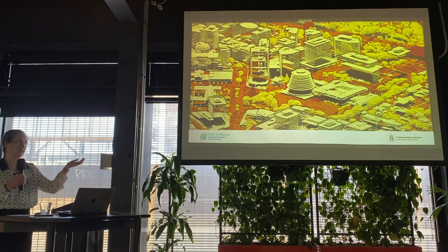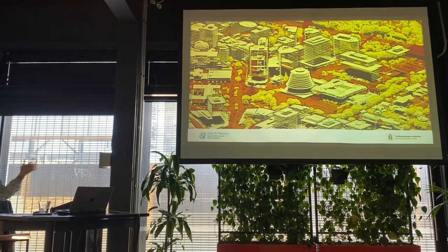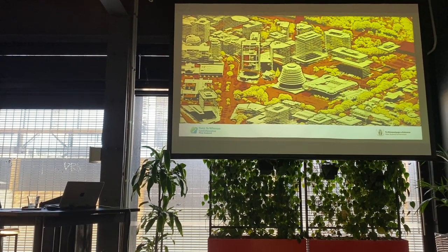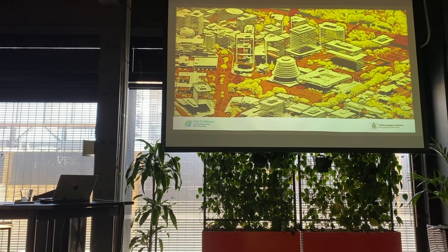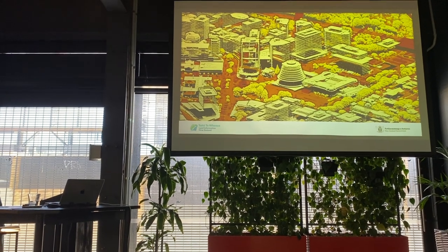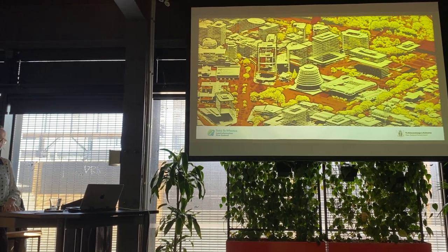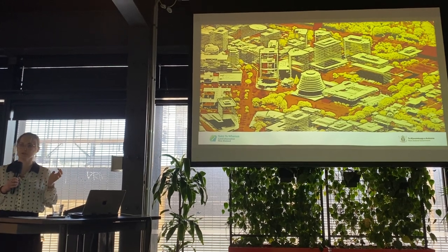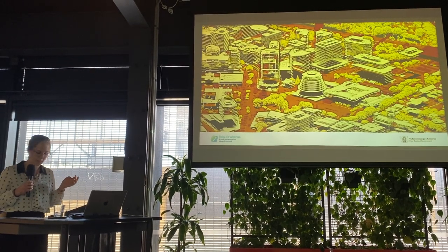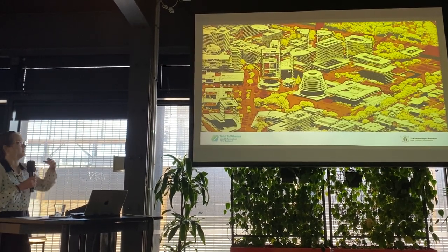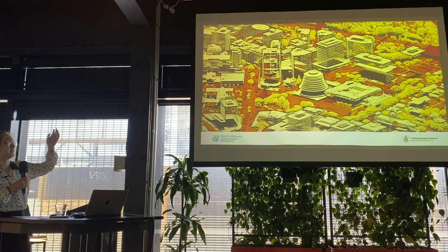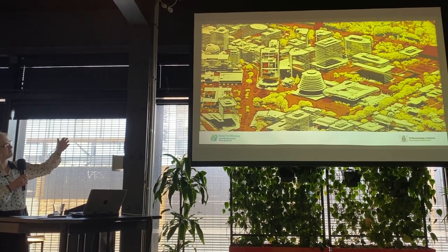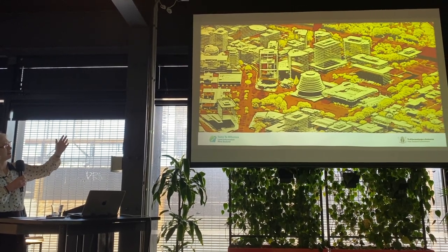When there are multiple points in the 3D space, it's termed a point cloud. This is another example of a point cloud — each point has multiple attributes. This has been symbolised by classification, where each colour represents a different surface feature. The buildings are cream, the ground is orange, and the vegetation is yellow.